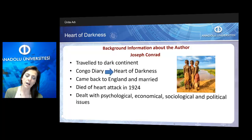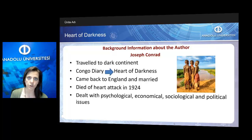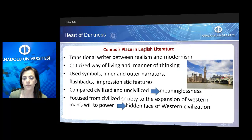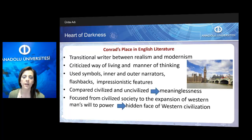In his literary works, he dealt generally with psychological, economical, sociological and political issues of his time. When we talk about Conrad's place in English literature, we can say that he is a transitional writer between realism and modernism, carrying elements from both sides. And he criticized the way of living and manner of thinking of Europeans especially.